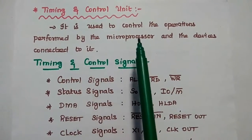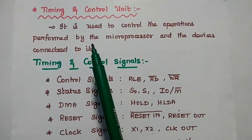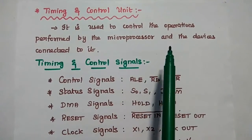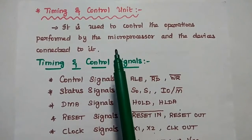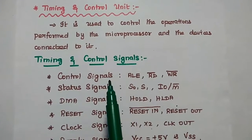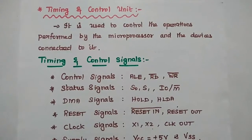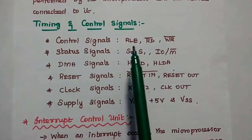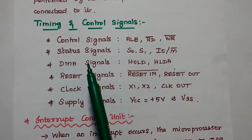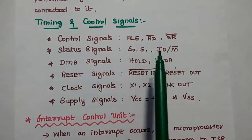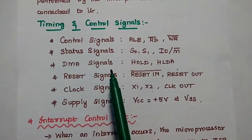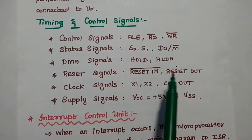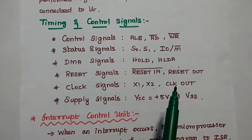The timing and control unit controls the operations performed by the processor and all connected devices. Its signals include: control signals ALE, Read bar, Write bar; status signals S0, S1, IO bar, M bar; direct memory access signals HOLD and HLDA; reset signals Reset In and Reset Out; and clock signals X1, X2, and Clock Out. Supply signals include VCC at plus 5 volts and a ground signal.